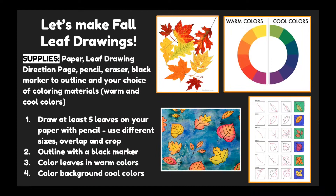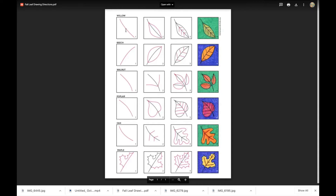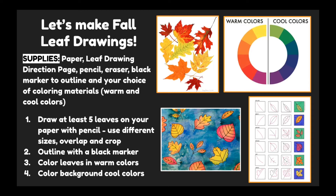Now that we've learned about what happens to leaves in the fall, let's make some fall leaf drawings. For your supplies you'll need paper, the leaf drawing direction page available in Google Classroom, a pencil, an eraser, a black marker to outline, and your choice of coloring materials. We will be using both warm and cool colors — with the color wheel split in half, yellows, oranges, and reds are warm colors, and greens, blues, and violets are cool colors.